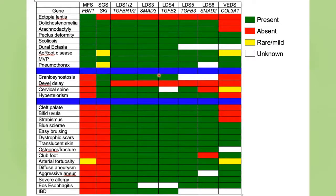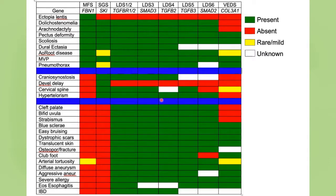There is a reference table showing the different physical findings across the different conditions. You can see that the middle conditions — the spectrum of Loeys-Dietz syndrome — look more like each other than they do the matrix disorders such as Marfan syndrome or type III collagen deficiency. This is something that can be referred to and will need to be updated as we learn more.